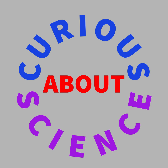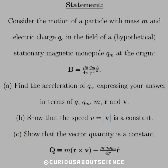We've got a pretty long and extensive problem, so I'm just going to tackle it head-on. This time we have more consideration of this hypothetical magnetic monopole. Let's consider the motion of a particle with mass m and an electric charge Qe in the field of a hypothetical stationary magnetic monopole Qm at the origin. We would expect the magnetic field to look like mu-naught over 4pi, Qm over R-squared in the R-hat direction.